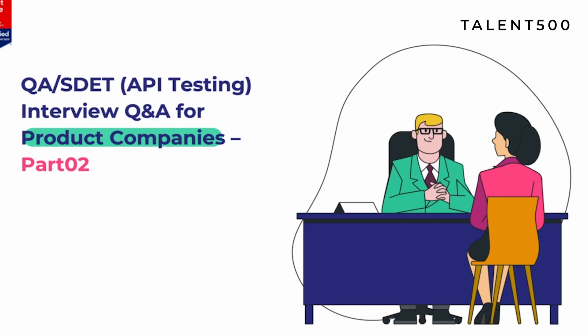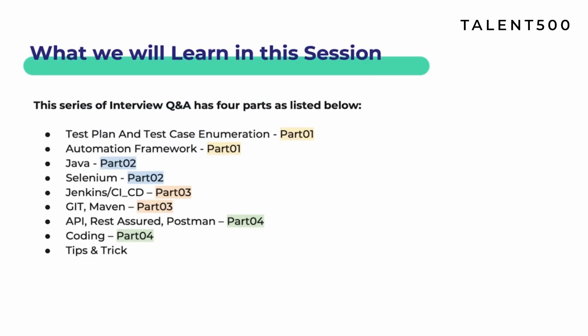Previously we discussed Selenium Java framework interview questions. Today's session is mostly focused on one of the most important aspects of automation, and that is API. Since the last five to six years, the demand of API testing and API automation has exponentially increased. Most product companies expect the usual QA role to contribute towards back-end or service-level testing, and knowledge of API is quite mandatory.